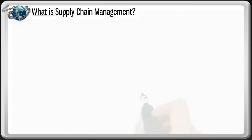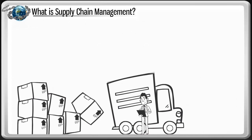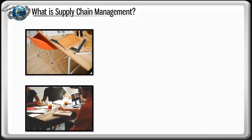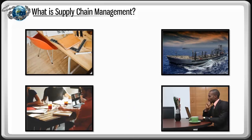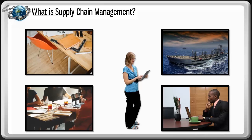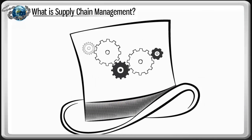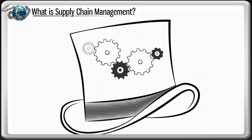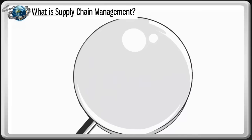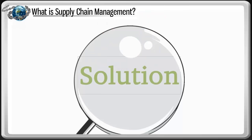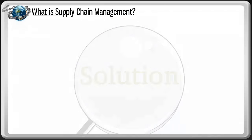Supply chain management means improving the supply process from one end to the other. It includes the design, planning, execution, control, and monitoring of supply chain activities. The role of supply chain professionals is to put on their creative thinking caps and collaborate with various areas within the organization to identify the problem and find a solution that prevents the breakdown from happening again.